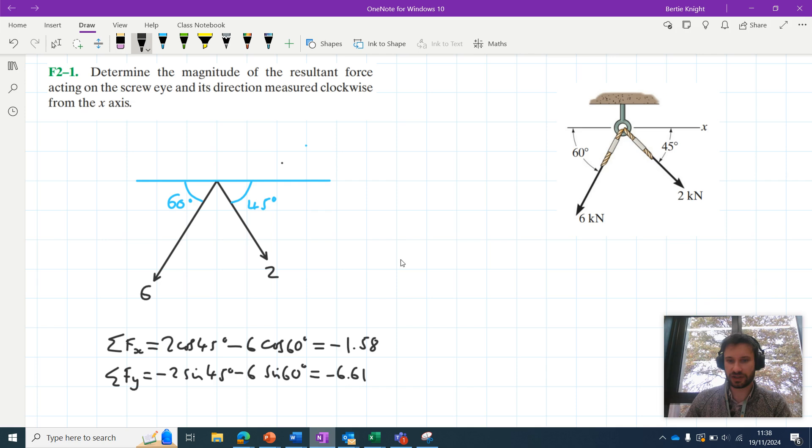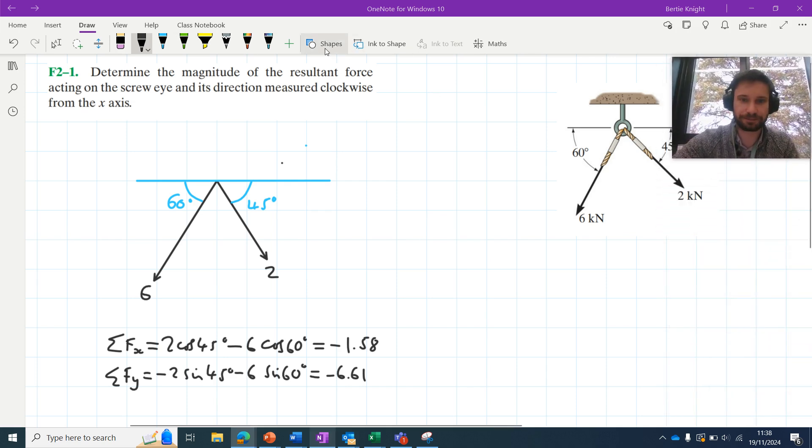Which essentially means if we were to draw a diagram of our resultant force, let me just move my face. If we were to draw a diagram of our resultant force, so combining these two forces, we'd say it's acting 1.58 to the left and 6.61 down. If we're to find the magnitude of the resultant force here, note we've got a right angle triangle.